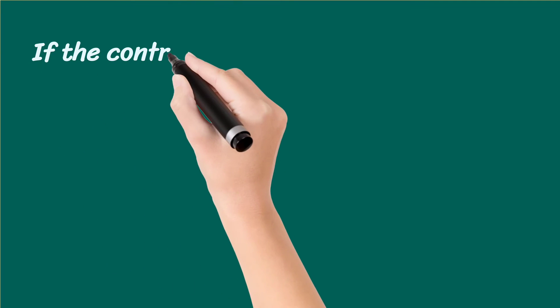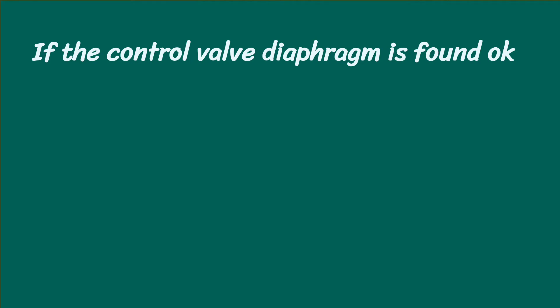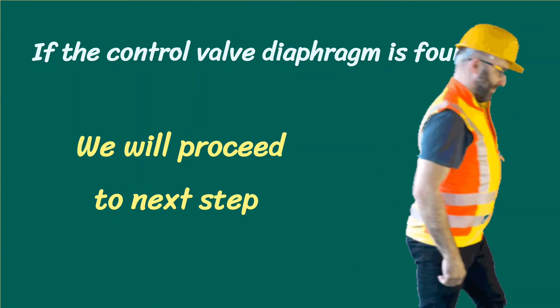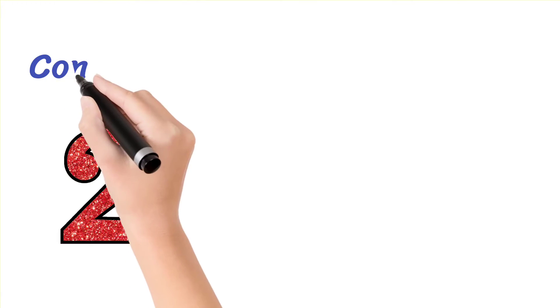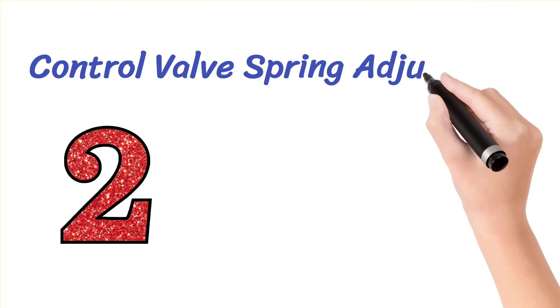If the control valve diaphragm is found OK, then we will proceed to the next step. The second reason is control valve spring adjustment.